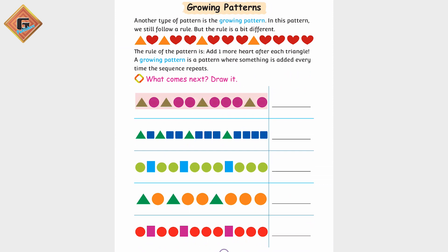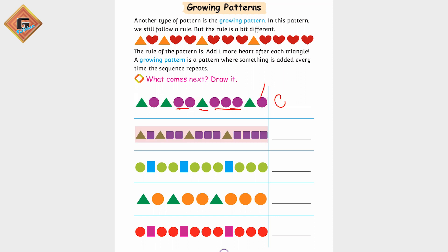One triangle then one circle. One triangle then two circles, again triangle — now how do we have? Three. Again, triangle, after how do we have? One, two, three and four.